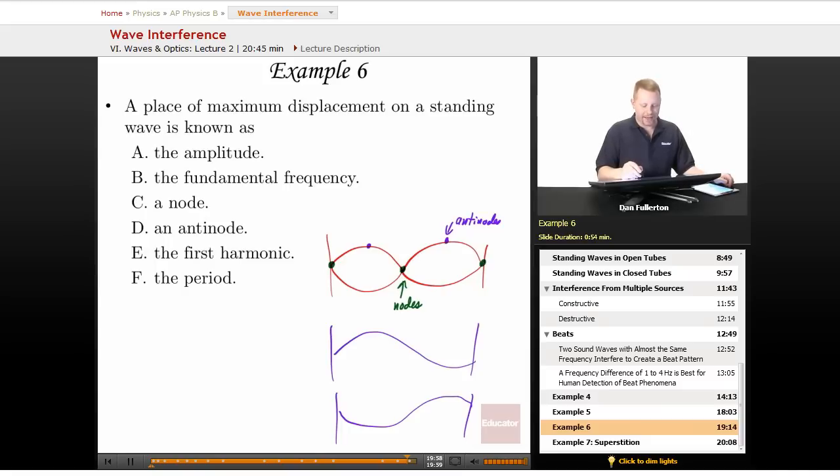What are the ones called where we have maximum displacement? Well, maximum displacement right there. That's an antinode.